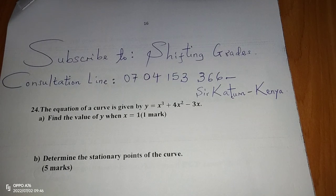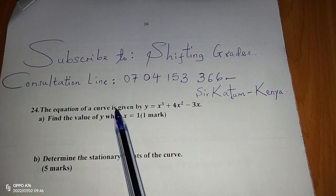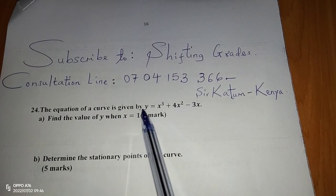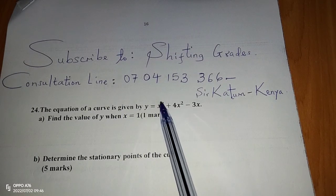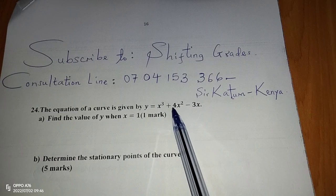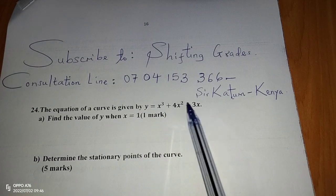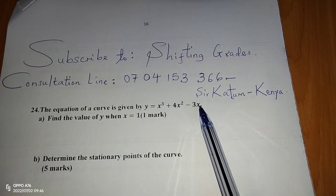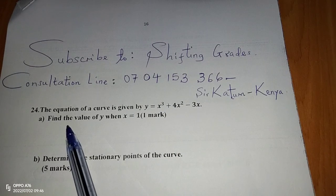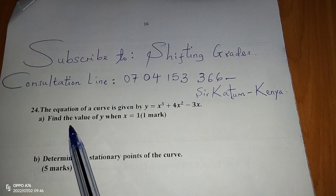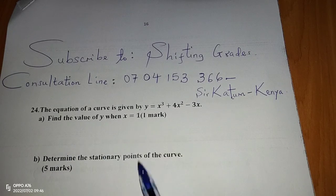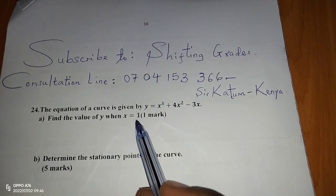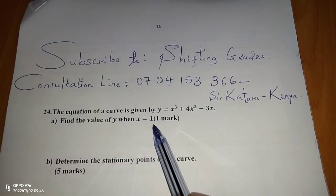The question tells us that the equation of a curve is given by y equals x cubed plus 4x squared minus 3x. Part (a) asks us to find the value of y when x equals 1.